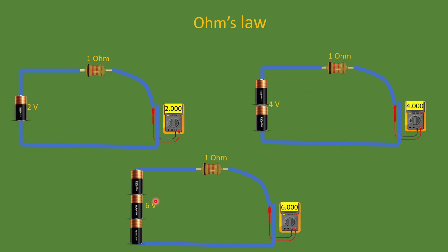Connecting batteries in series increases the overall voltage. In the third case, three 2-volt batteries are connected in series, giving a combined voltage of 6 volts and a current of 6 amps on the multimeter. If you are increasing the voltage, the current also increases — that is, current is determined by the voltage across its ends. That is Ohm's law.